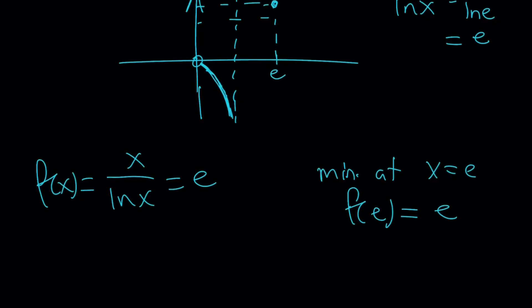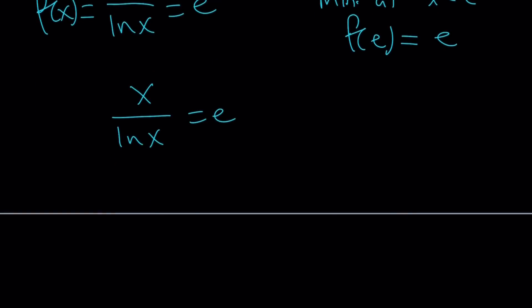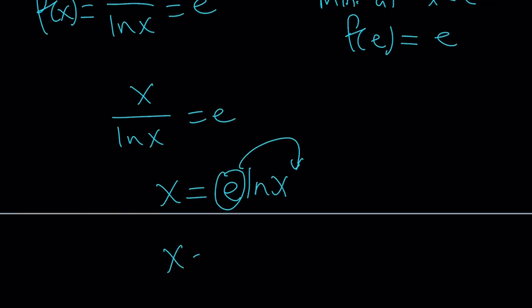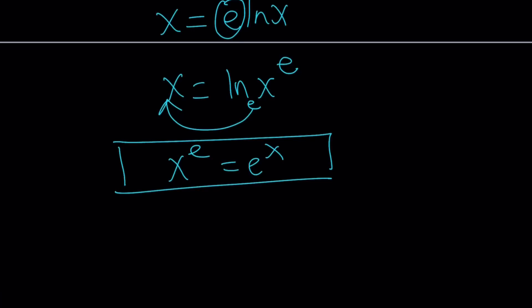There are obviously other ways to look at the problem — you could cross-multiply to get x equals e times ln x, or e ln x. Bringing the e into the exponent gives x equals ln x to the power e, and then by the definition of logs, this means e to the x equals x to the e. I believe we've done a video on this before. This also gives us the exact same solution x equals e, because e to the power e equals e to the power e.